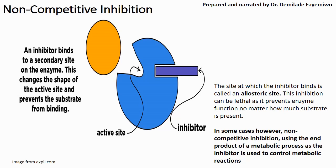When the substrate comes through, the shape of the active site has changed, which means that the substrate is unable to fit into the active site and therefore there can be no reaction. Non-competitive inhibition can be very lethal in some cases, especially if it occurs in a metabolic reaction. So as much as possible, it is to be avoided.